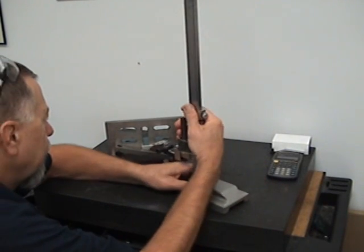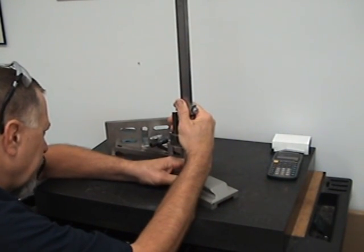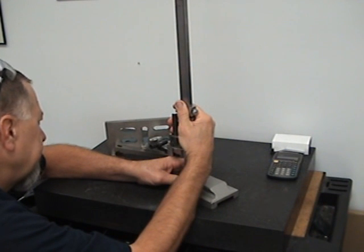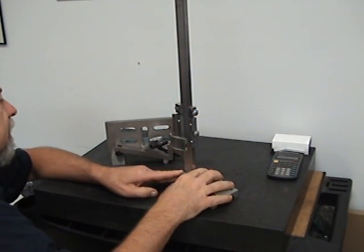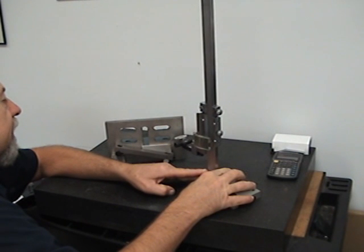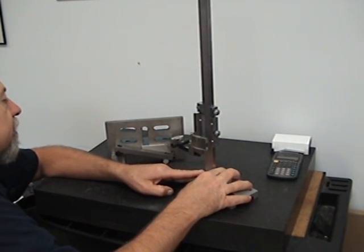So we're going to use our test indicator and our Vernier height gauge merely as a way to check that it's zero at one end and zero at the other.